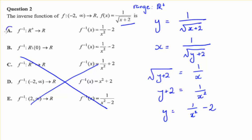So our answer is A. Notice that you can reject B because its domain has negative values — it's all the reals excluding 0. Since this quantity can't be negative, that's how we know the answer is A.